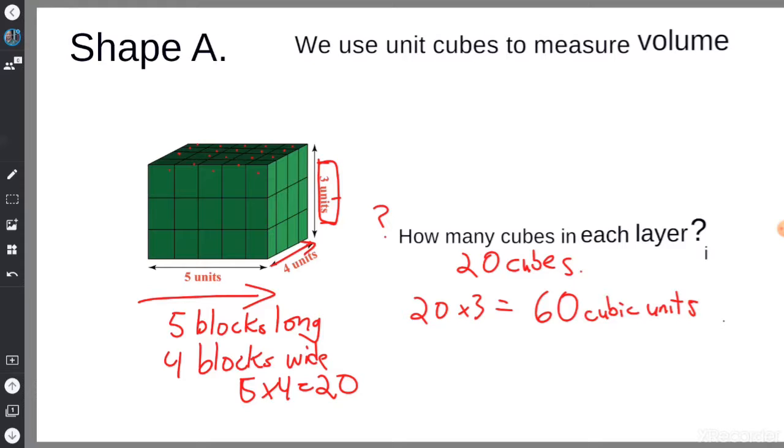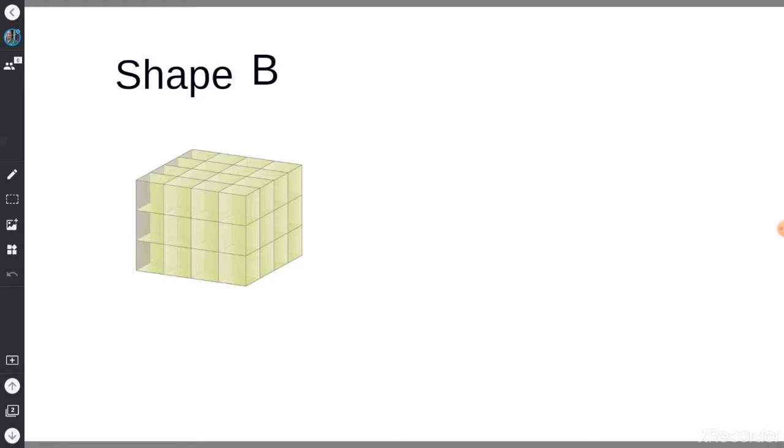Alright, Shape B. There are blank layers and blank unit cubes in each layer. Why don't you pause the video and do that work right now? How many layers are there and how many unit cubes are in each layer? Pause it, write down your answer, and then resume the video.